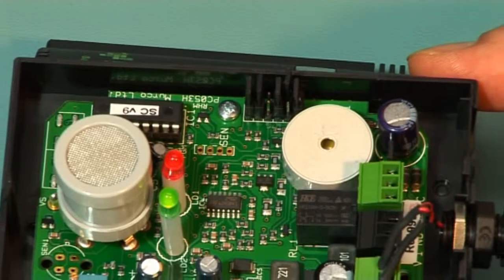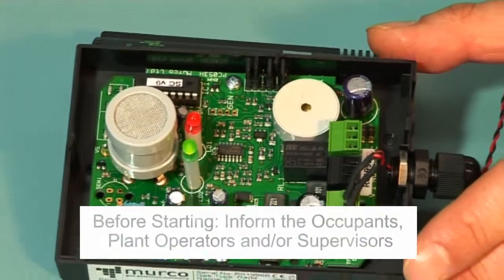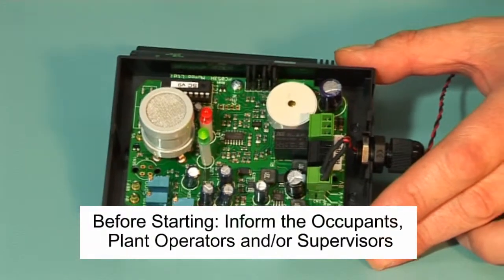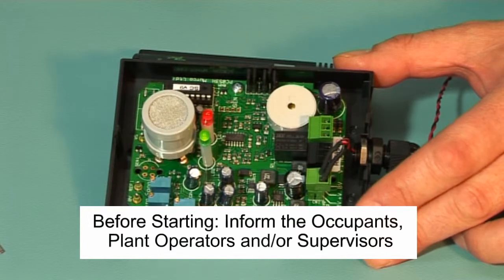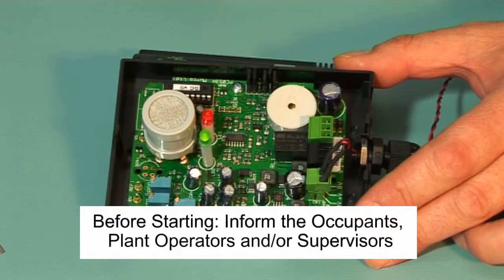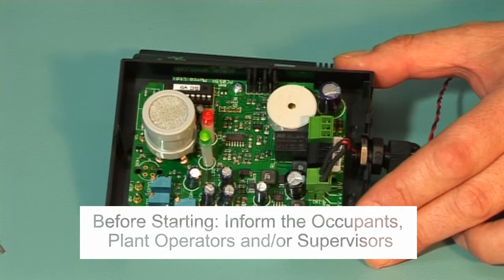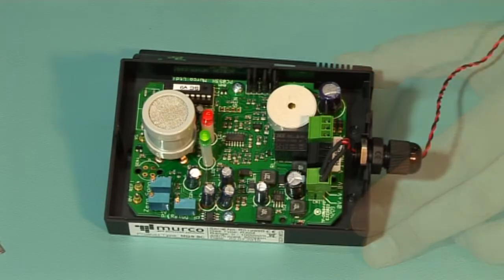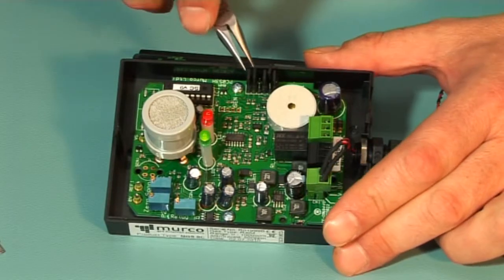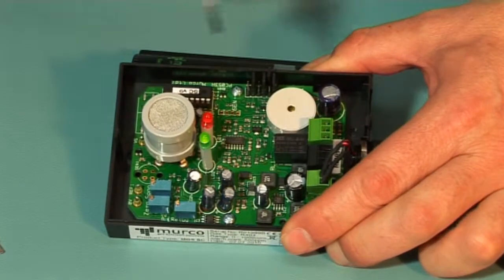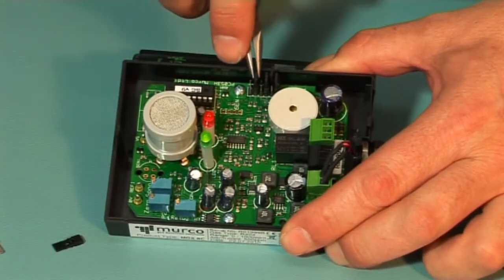The jumpers are normally red or black in color. Before starting, inform the occupants, plant operators and or supervisors of the test. Check MGS connections to external equipment and disconnect if required. Deactivate any delays by removing jumpers JP5 and JP6.